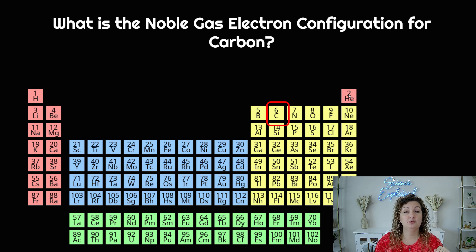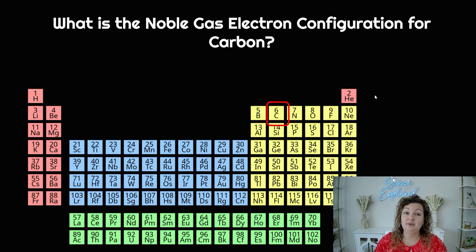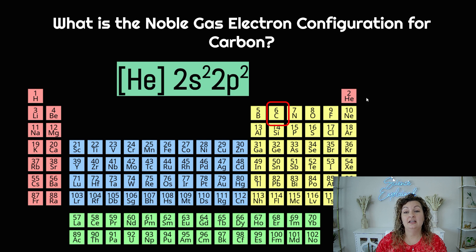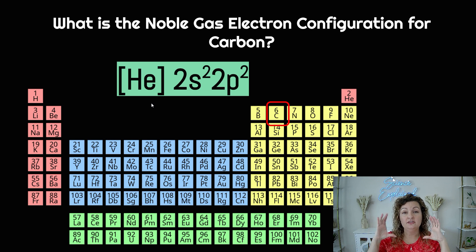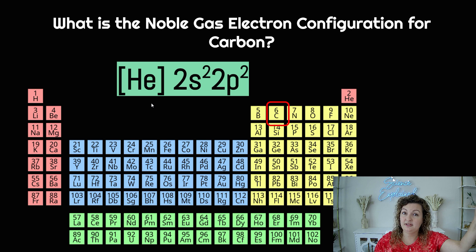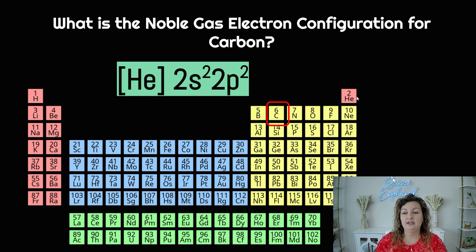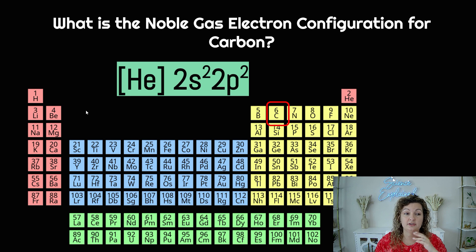So helium is going to be the one that I'm going to start with. And in order to do this correctly, we have to put helium — the symbol — in brackets. So we put it in brackets, and this lets you know we're starting here. We're not starting at the beginning — we're going to start here instead. So we're starting at helium, and then we would end up going just like normal from there, reading a book.